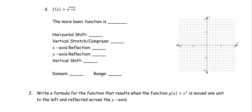In part D, f(x) is the square root of negative x. The more basic function is g(x) = √x, and the sketch of the graph is the radical function form.